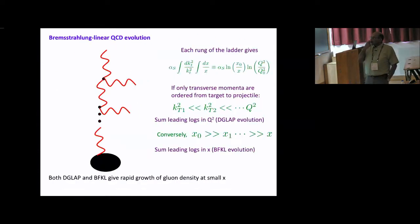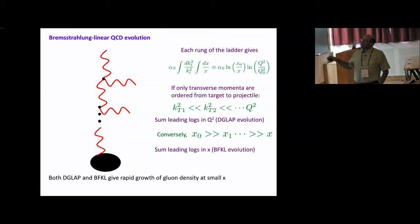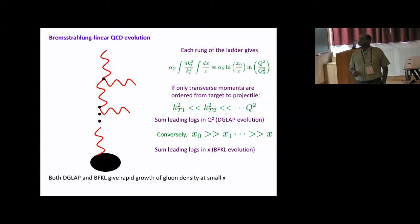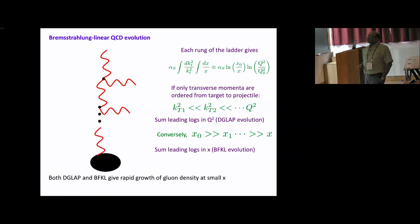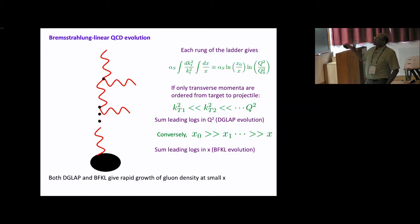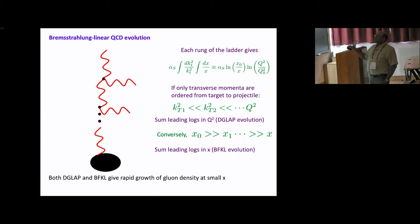To understand this less heuristically: a virtual photon produces a quark-antiquark pair which starts emitting gluons, forming a ladder of gluons that comes from the quarks coupled to the photon. Each rung of the ladder has a phase-space factor going as dkT²/kT² × dx/x, where x is the longitudinal momentum fraction carried by the emitted parton and kT is its transverse momentum. Squaring the amplitude brings in a factor of αs.